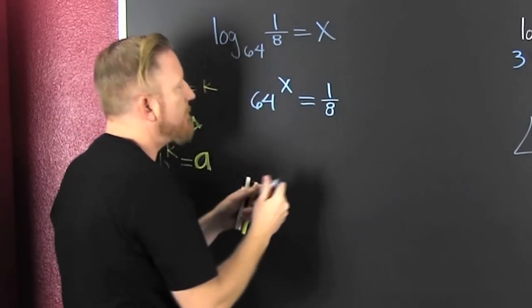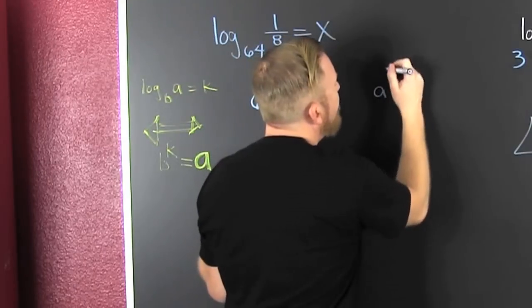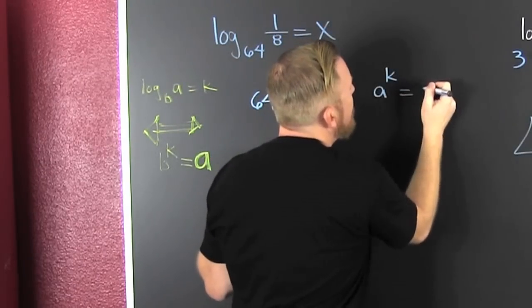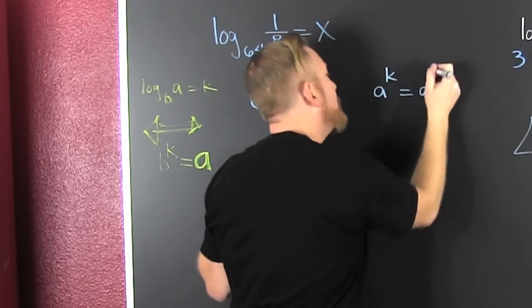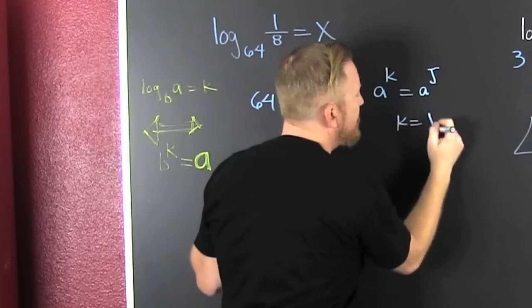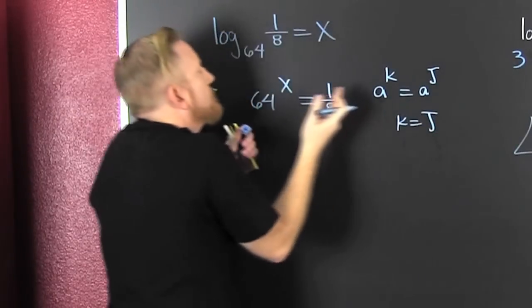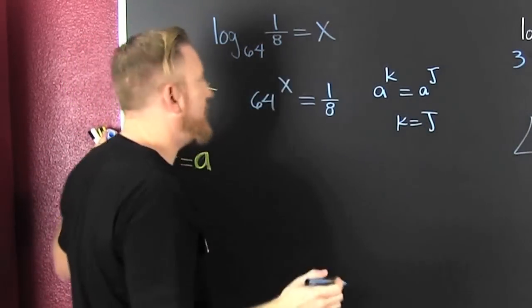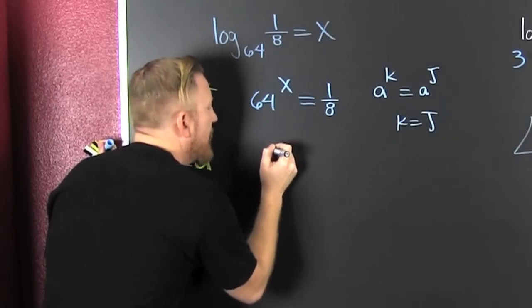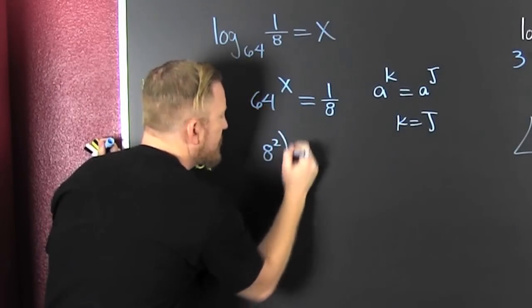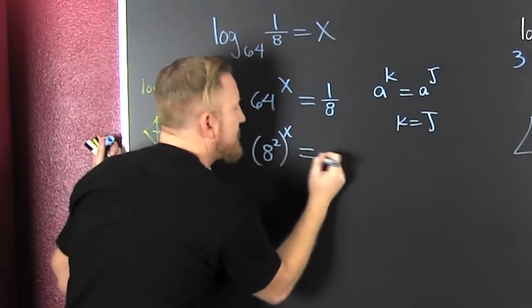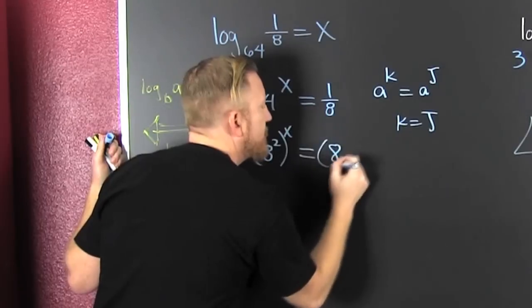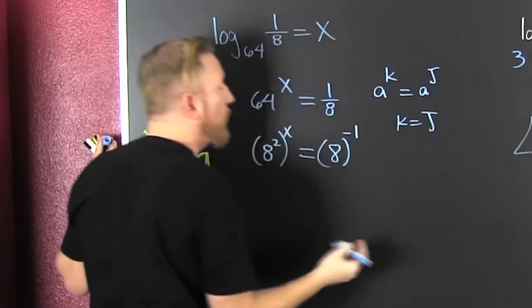Now what? I'm trying to get the same base. Why? Because if I have a to the k is a to the j, then k is j. I know. I want both of them to be base 8. Boom, boom, boom. Here I have 8 to the deuce to the x. That's the same as 8 to the minus 1. Fun.